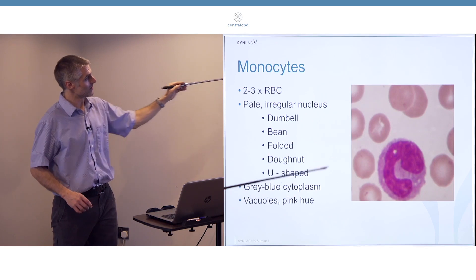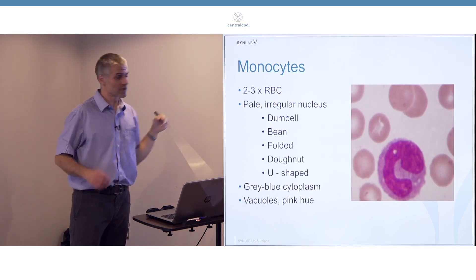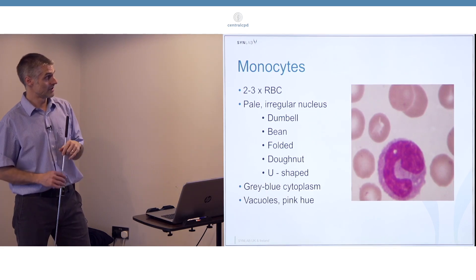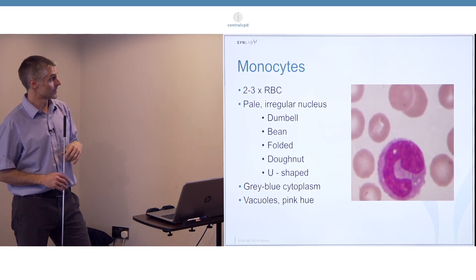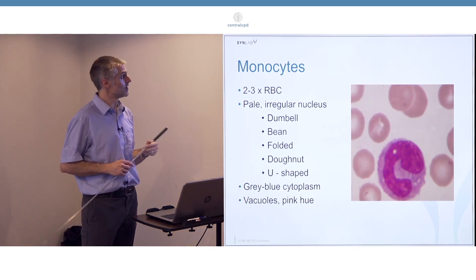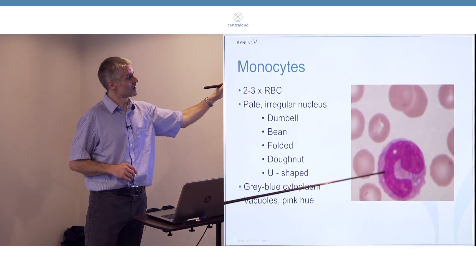It might become vacuolated and have clear white holes when it becomes activated. It'll also have clear white holes when it becomes degenerate in the blood tube over time in vitro. Sometimes depending on stain you can have a slight pink hue to them.